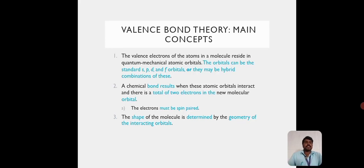The main concepts of valence bond theory. The valence electrons of the atoms in a molecule reside in quantum mechanical atomic orbitals. The orbitals can be the standard S, P, D, and F orbitals or they may be a combination of these. The chemical bond results when these atomic orbitals interact and there is a total of 2 electrons in the new molecular orbital. The electrons must be spin-paired. The shape of the molecule is determined by the geometry of the interacting orbitals.